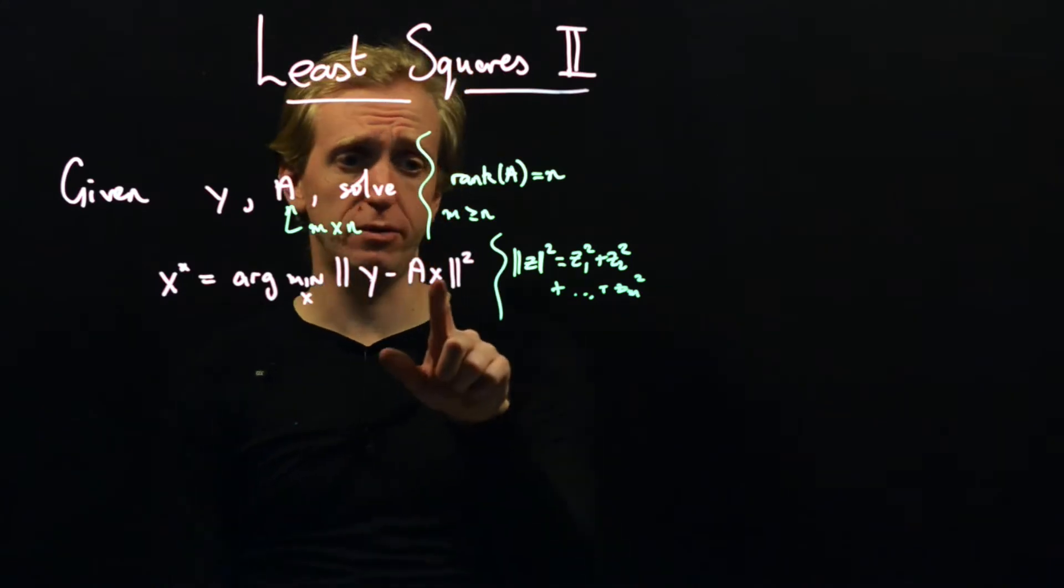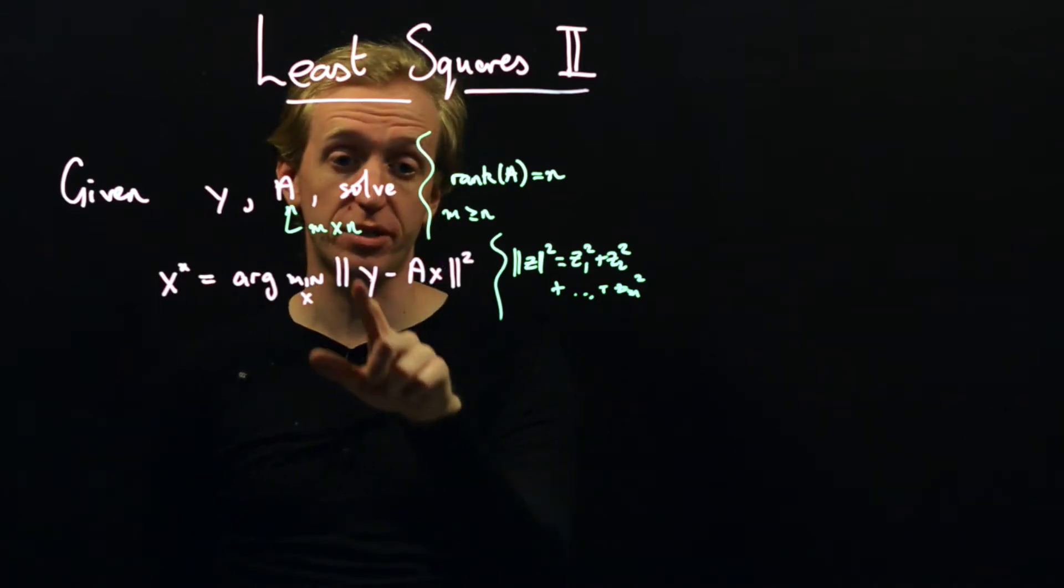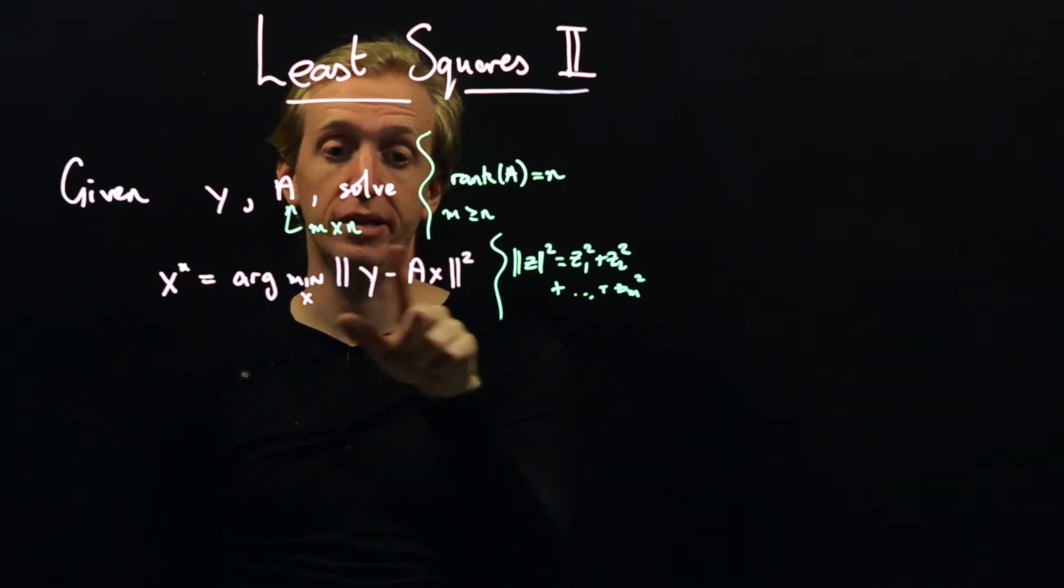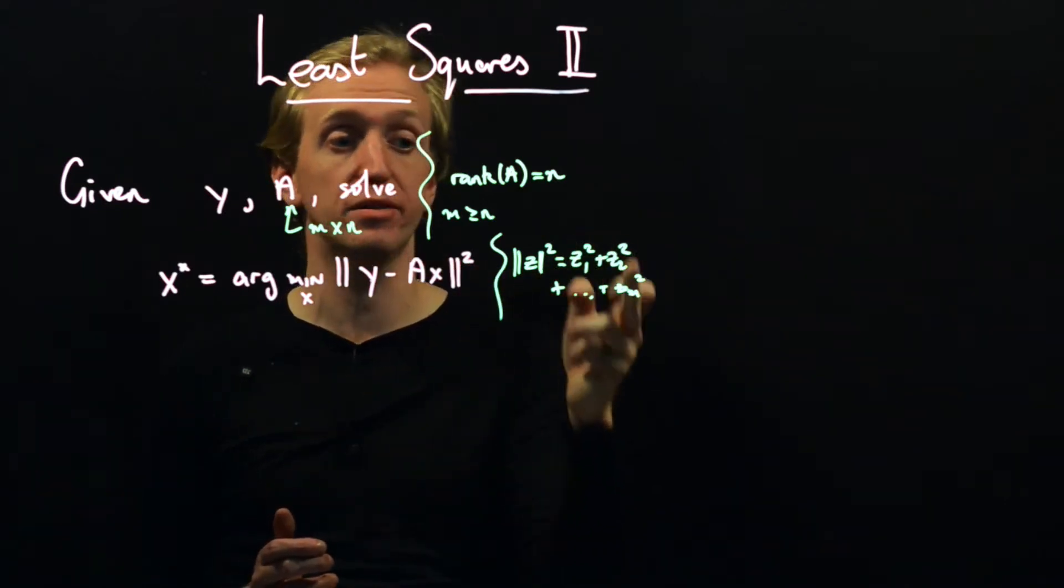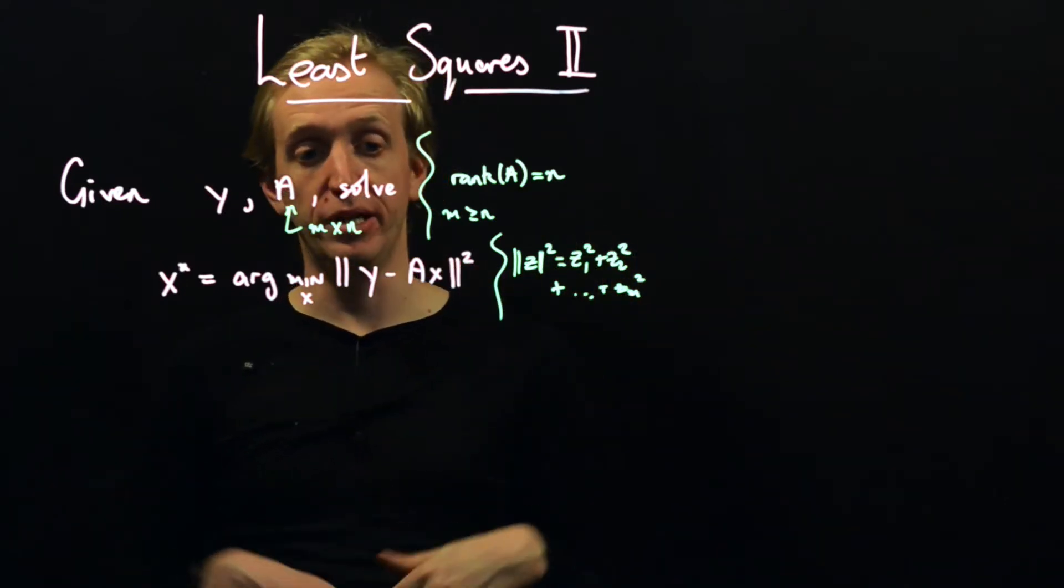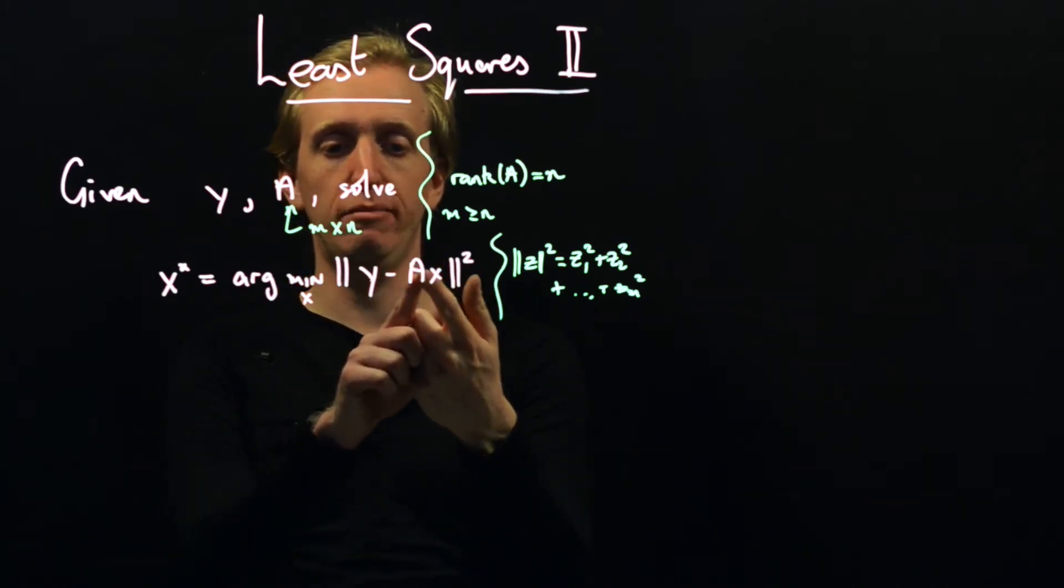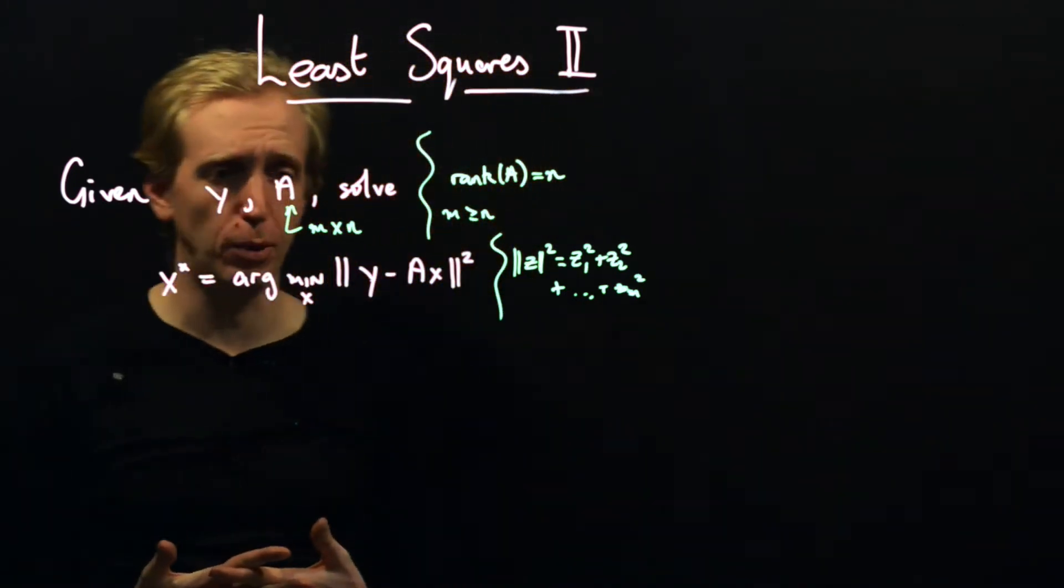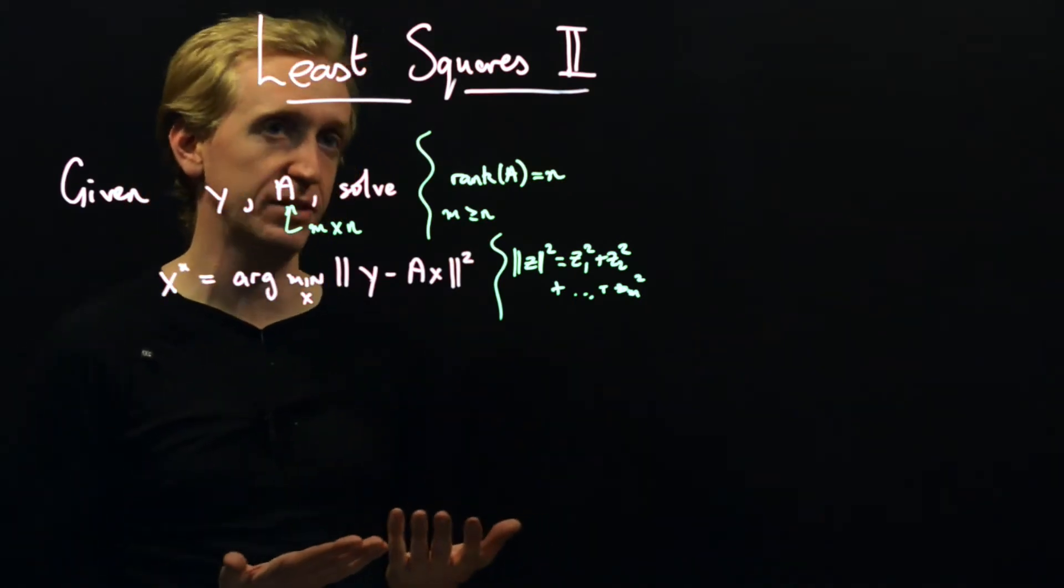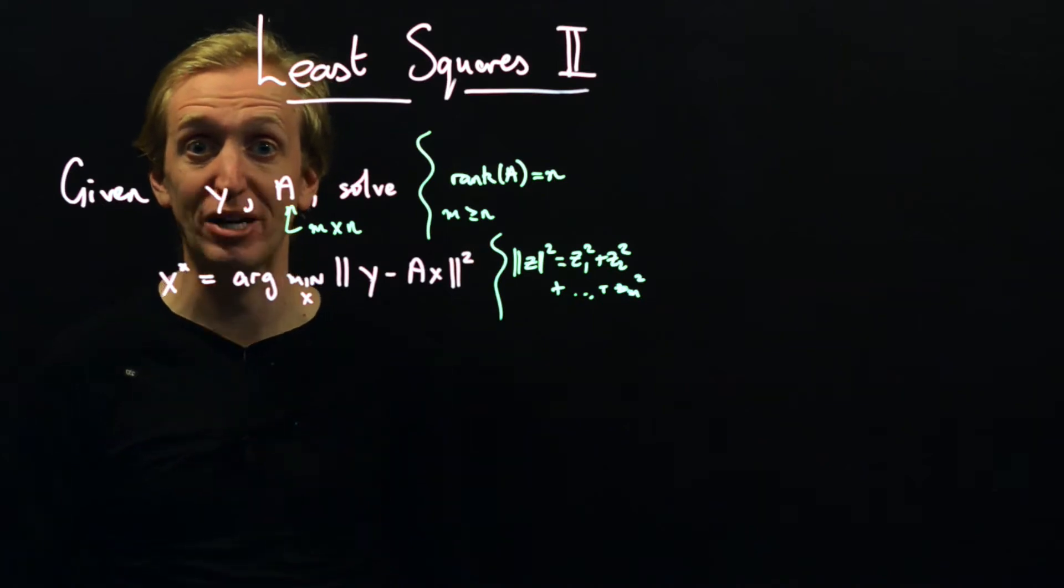And now suppose that there was a value of x that solved y equals Ax. Well, now we would just pick that value and then this here would be equal to zero. And that's as small as we can make this. This is always greater than or equal to zero. But in general, there will be no solution and we're just trying to pick the one that makes the difference between y and Ax as small as possible. And if you've seen least squares problems before, this is probably the class of least squares problems that you've come across. This is the one that comes up in regression problems.